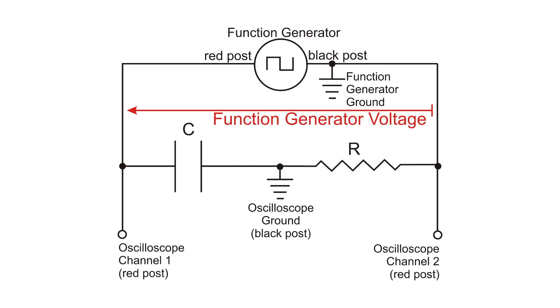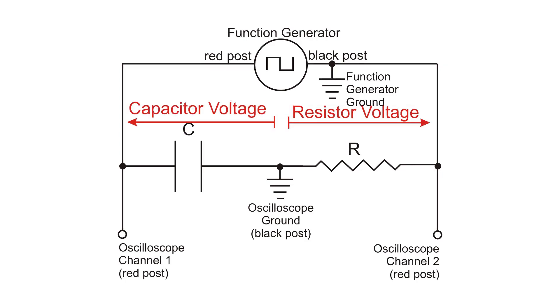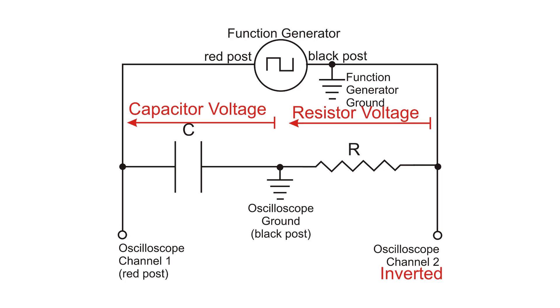The function generator voltage is measured relative to the function generator ground. In our diagram, that's from the far right side to the far left side. The oscilloscope measures the voltages for the capacitor and the resistor from the oscilloscope ground. That is from the middle of our diagram. So the capacitor is measured to the left and the resistor is measured to the right. We want to measure both of them to the left in the same direction as the function generator.